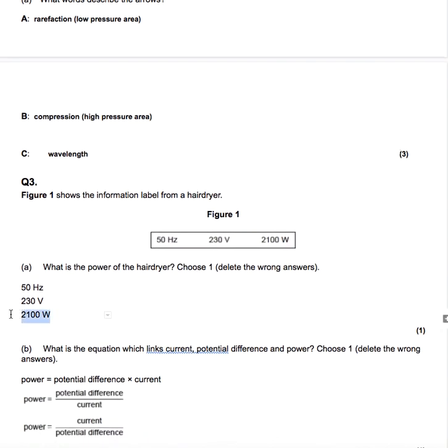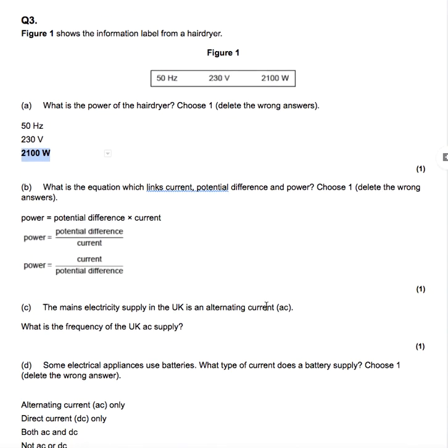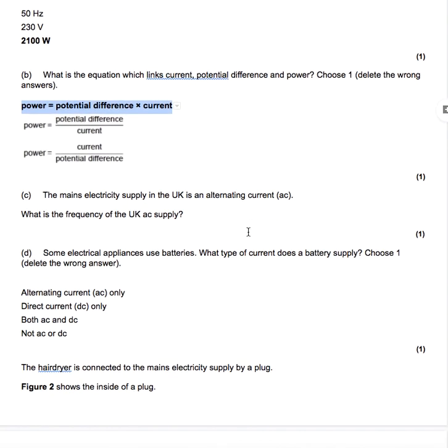Information from a hairdryer. Which of these is the power? Well of course power is measured in watts. It's got to be 2100 watts. What is the equation which links current, potential difference and power? You need to know this equation. So power is potential difference times current for one mark. Now remember, in your GCSE, your physics GCSE, basically about 40% of the marks will come from maths and the application of it. If you don't know and are unable to use the equations that you need to know, you are going to drop those 40%. That's disastrous. Make sure that you know your equations.